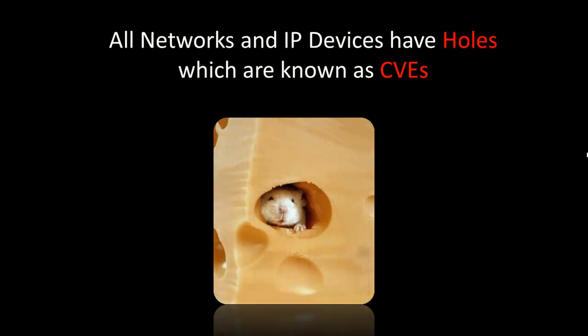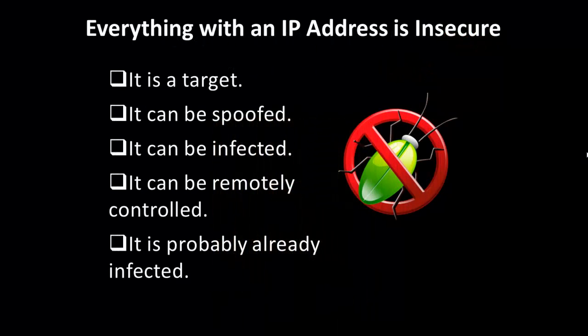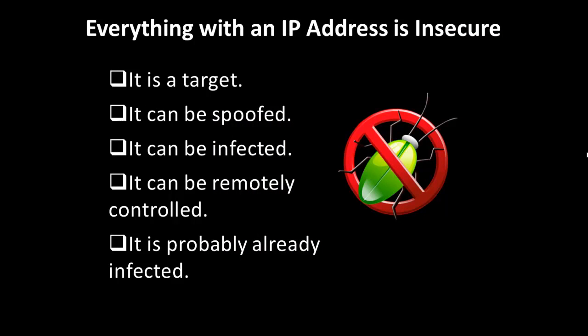All networks and IP devices have holes which are known as CVEs — Common Vulnerabilities and Exposures. Everything with an IP address is insecure; it's a target. It can be spoofed, infected, remotely controlled, and it probably already has zero-day malware or an advanced persistent threat. It's probably already infected and you don't know it.